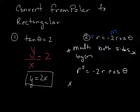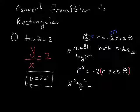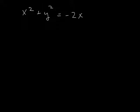R squared becomes X squared plus Y squared. R cosine of theta becomes negative 2 X, right?